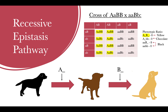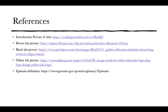This cross would result in a different ratio as shown by the table. Highlighted are all the offspring that would show the yellow phenotype, once again because they are dominant at both loci. The non-highlighted squares show all the offspring that will remain black due to them being recessive at the A locus. Thanks for watching, and my sources are on the screen as well as in the description box below the video.